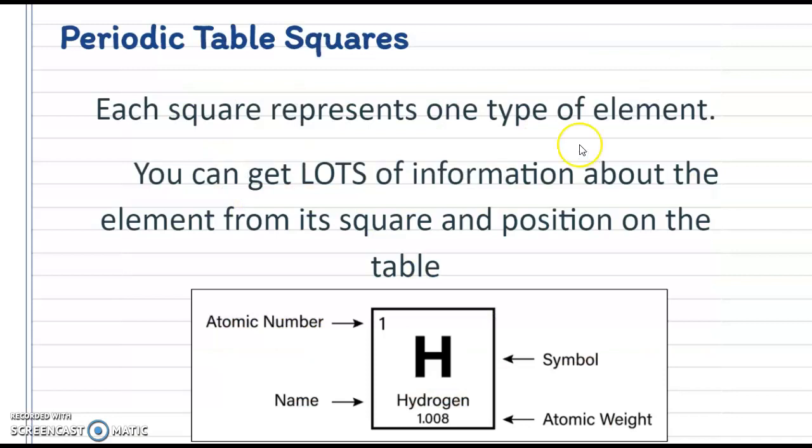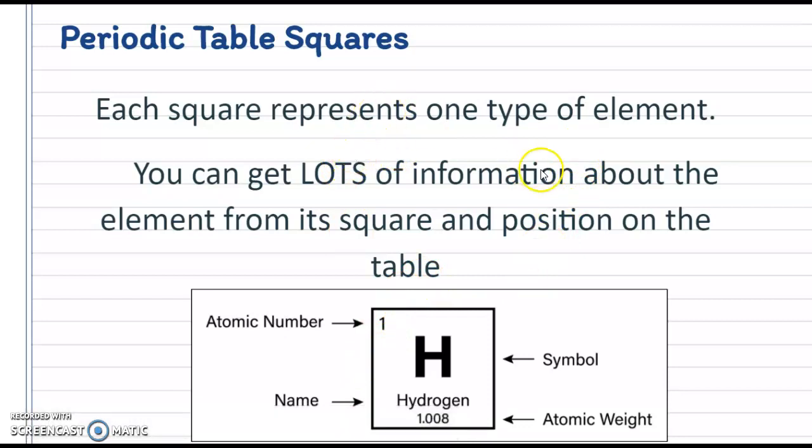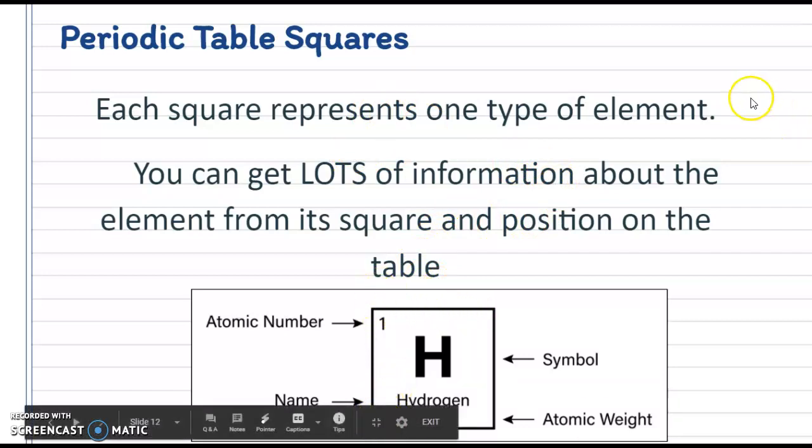How do we read our periodic table square? So each square represents one type of element. You can get lots of information about that element just from the square and its position on the table. So if we look at our little box here, we have our hydrogen blown up a little bit so that we can see it a little closer.